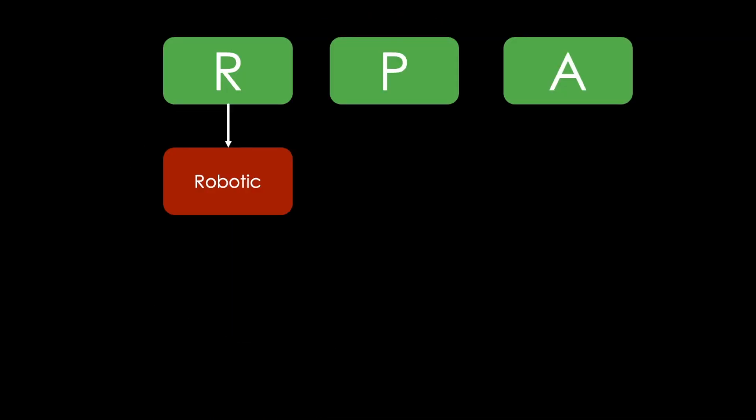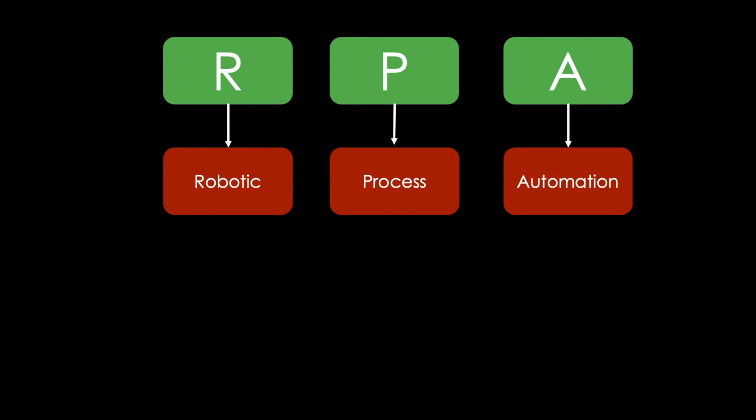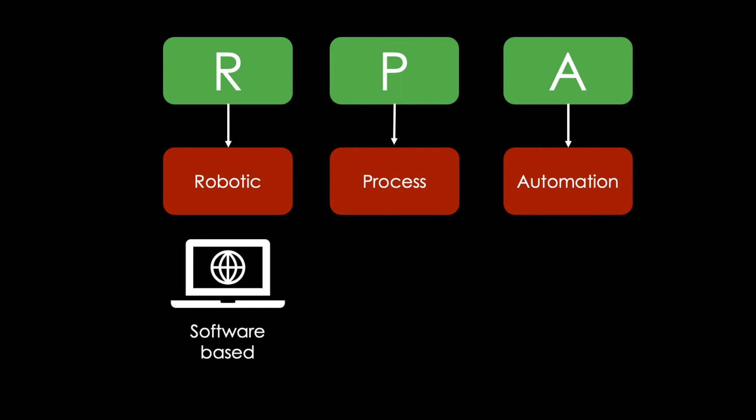RPA stands for Robotic Process Automation. And even though it sounds like we are talking about physical robots here, the term robotic refers to software bots. These software bots perform digital business processes by emulating human actions, thereby automating business processes so that little or no human intervention is required anymore.